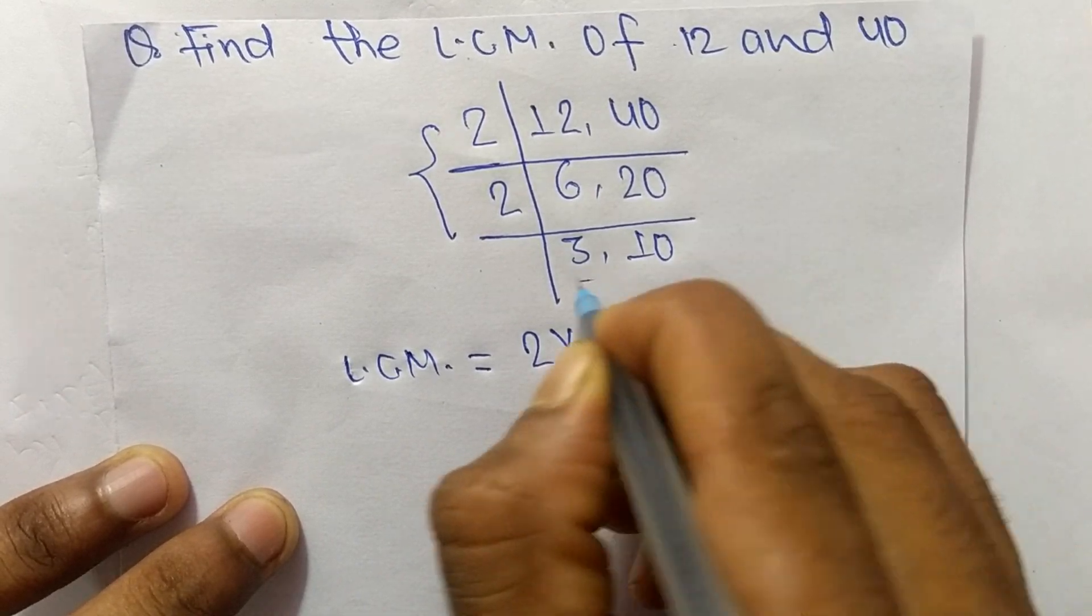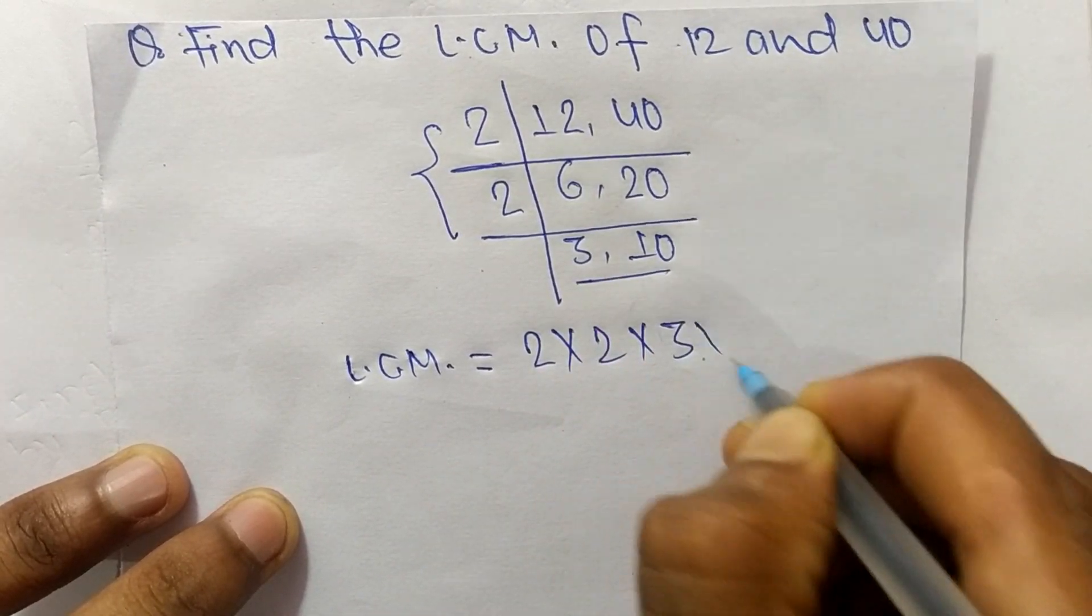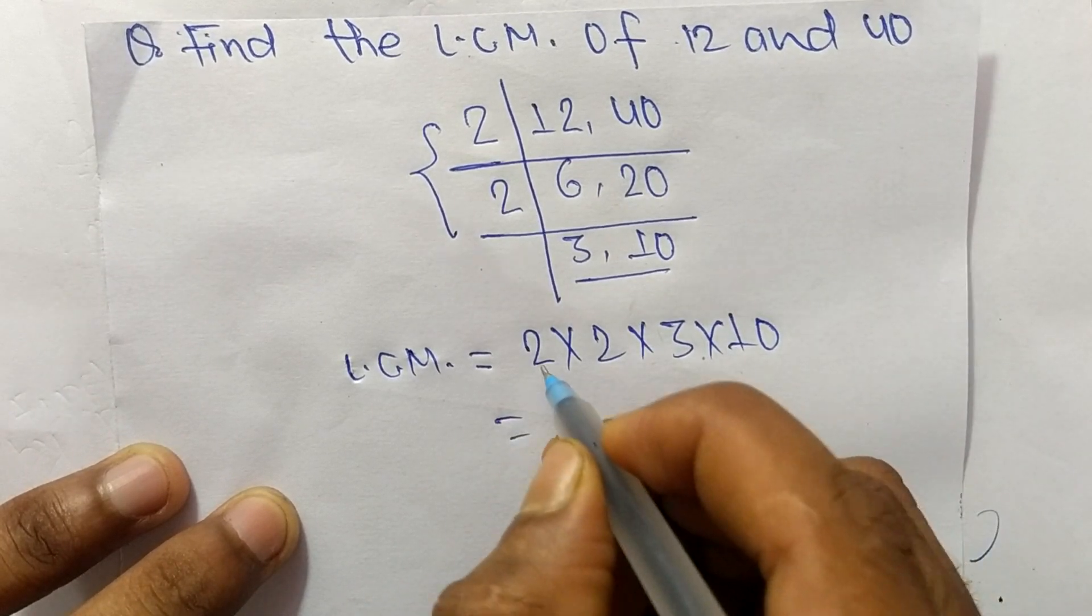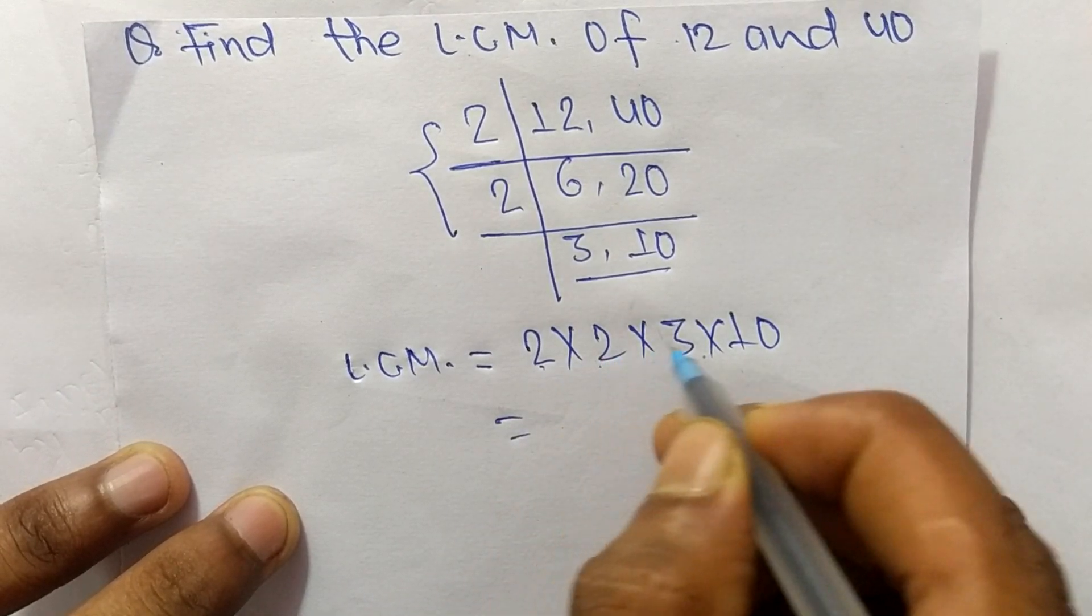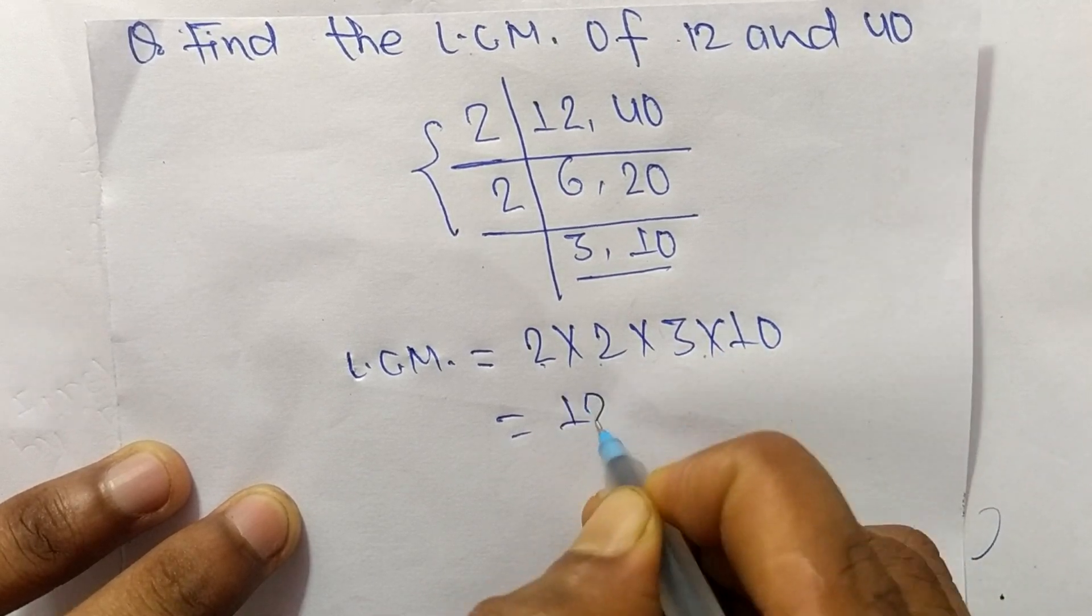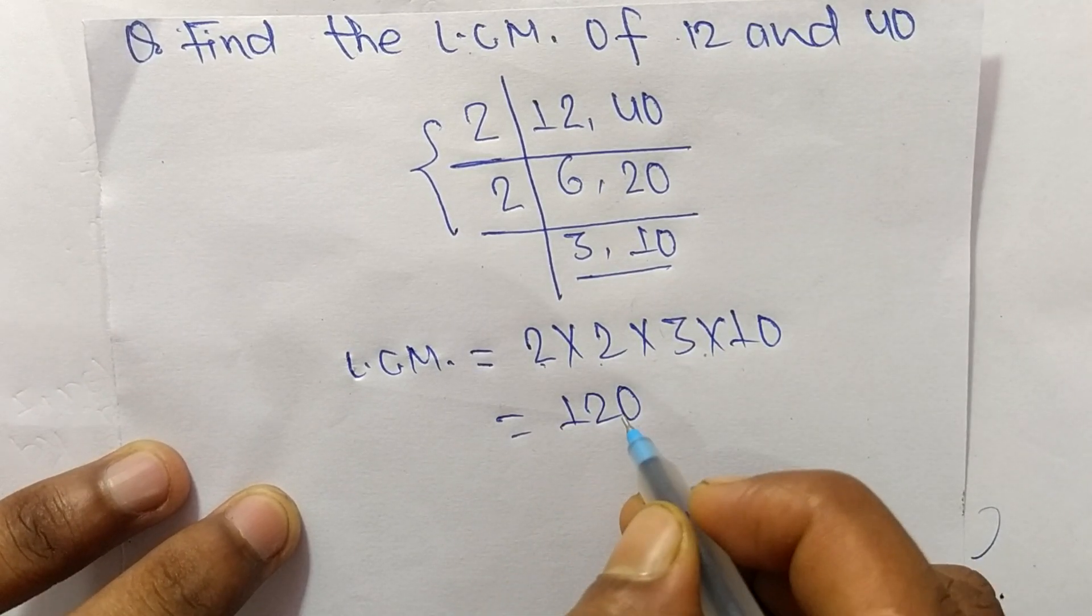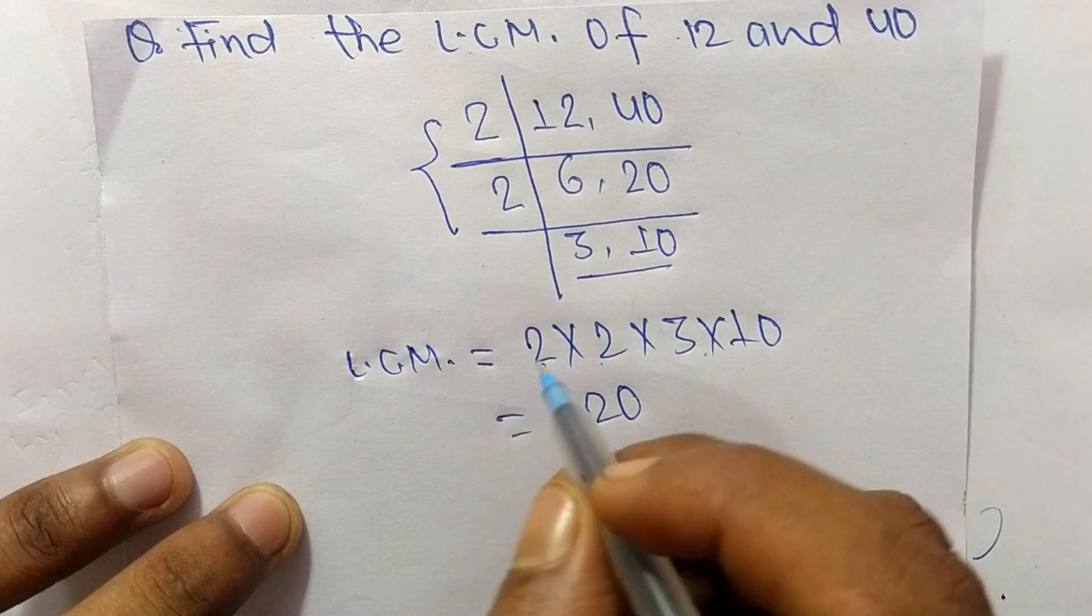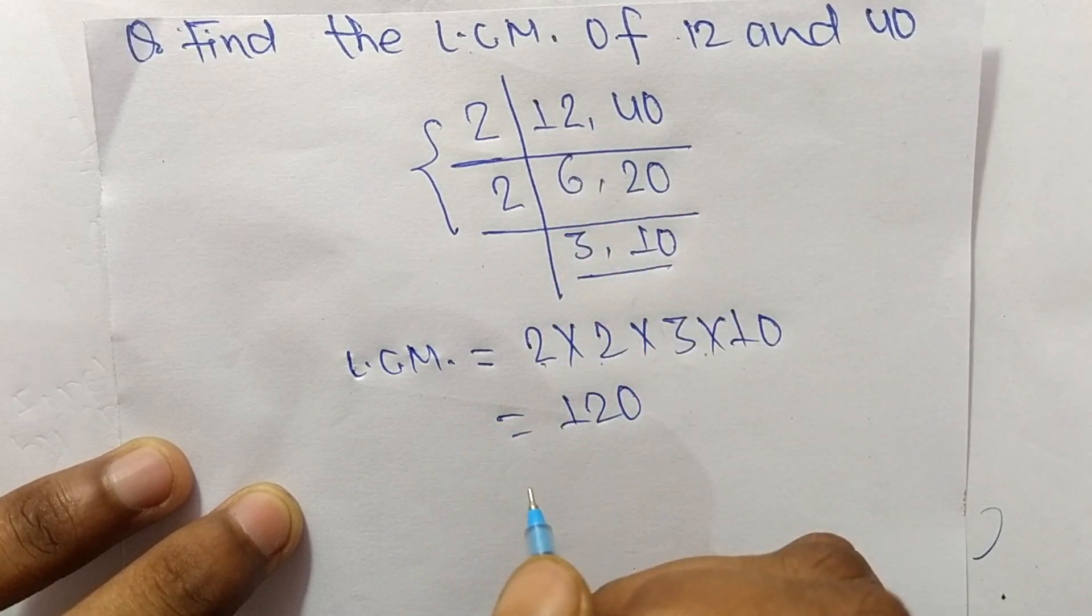So 2 times 2 means 4, 4 times 3 means 12, and 12 times 10 means it is 120. So 120 is the LCM of 12 and 40.